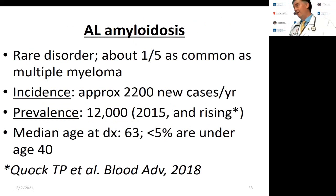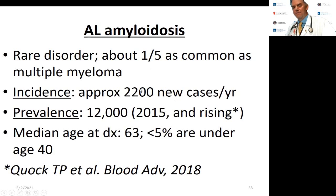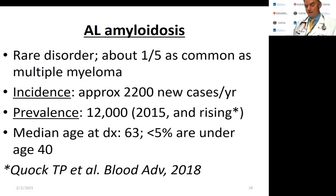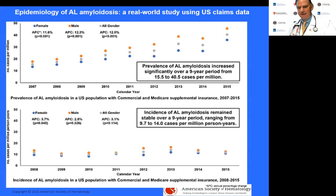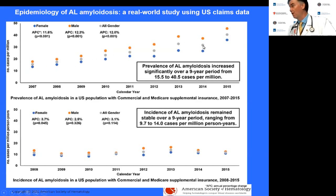AL amyloidosis is a rare disorder — about 2,200 new cases per year, roughly one-fifth as common as multiple myeloma. The prevalence is approximately 12,000 in the U.S. as of 2015, and it is rising. The median age of diagnosis is 63, similar to myeloma but a little younger, and it is quite rare under age 40. Real-world claims data show prevalence slowly increasing as people live longer and treatments improve, with incidence relatively flat.